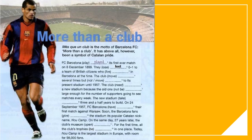For the following text, there are blanks to fill in. Please complete the exercise. Numbers 1 and 2 are already done as examples: 'FC Barcelona played its first ever match on 8th December 1899. They lost 0-1 to a team of British citizens who lived...' You complete from number 3 to number 12. You may answer in the comments of this video.